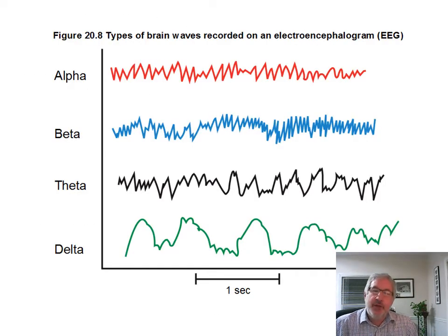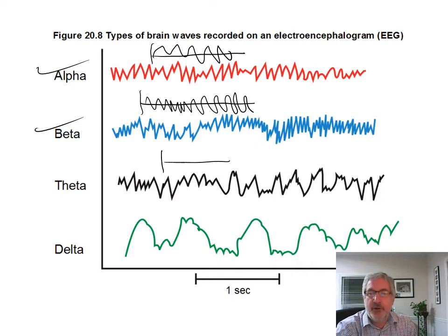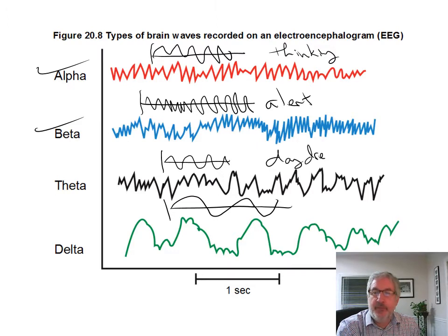Here are some examples of brainwaves. Beta waves are the highest frequency — you have the most of those. Alpha waves are a little bit less. Theta waves are a little bit longer. Delta are your long waves. So beta is most alert, alpha is awake but thinking, theta is daydreaming, and delta is sleeping.